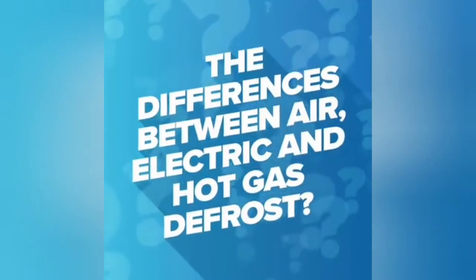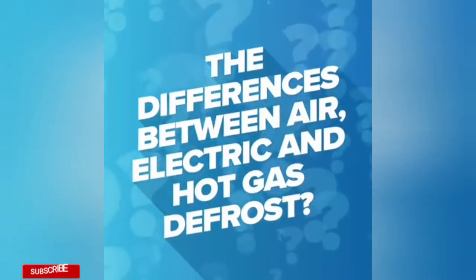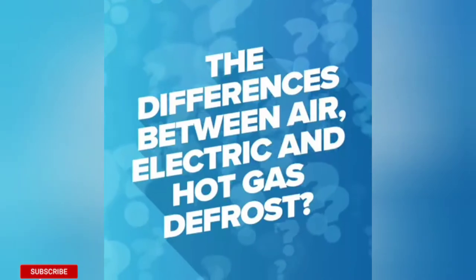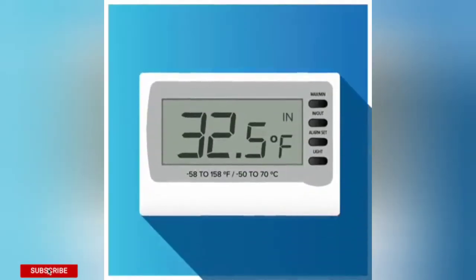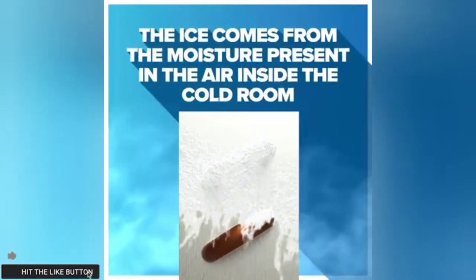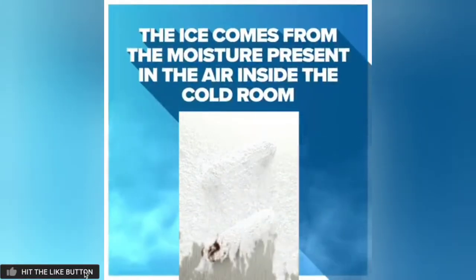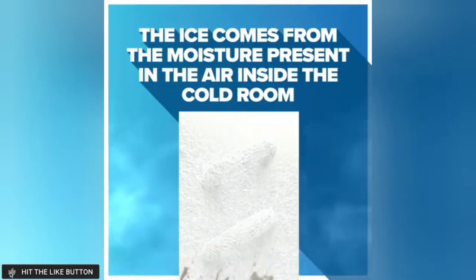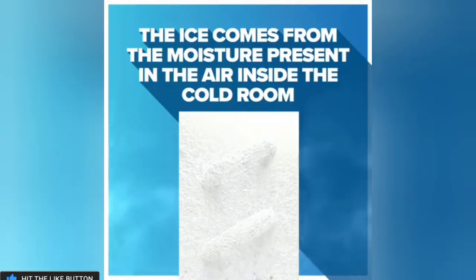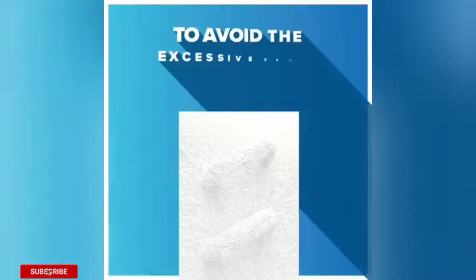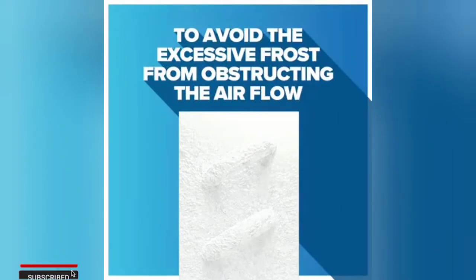Between air, electric, and hot gas defrost, refrigeration systems that operate at temperatures close to 32 degrees or lower will form ice on the evaporator coil. This ice comes from moisture present in the air inside the cold room that freezes when it contacts the fins of the evaporator coil.